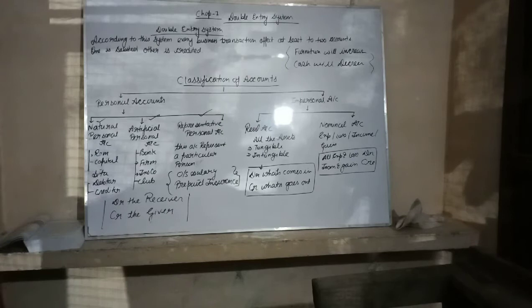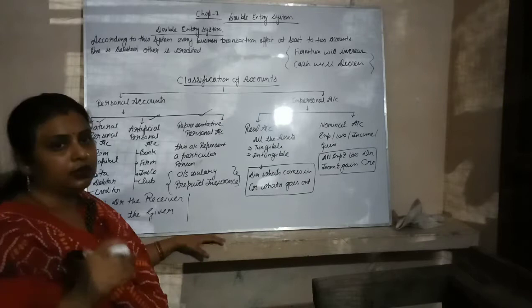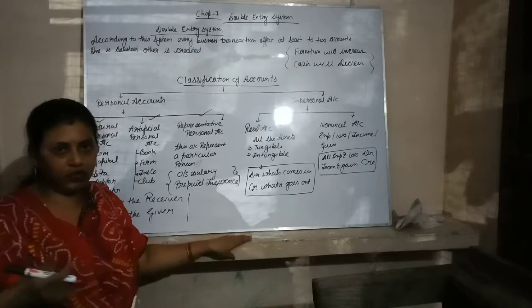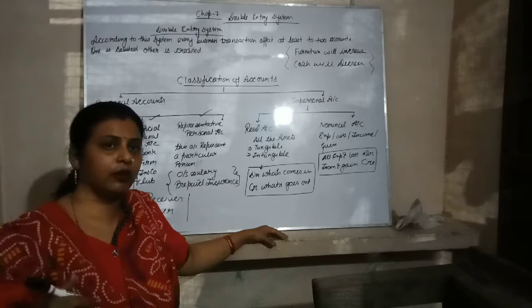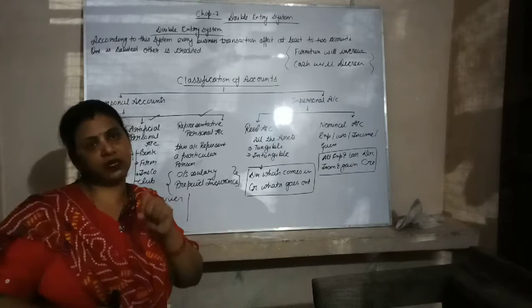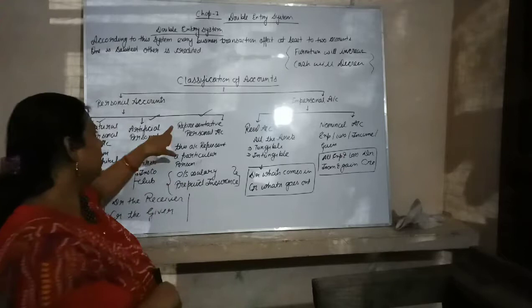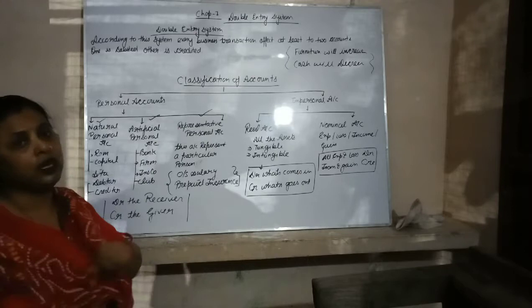Natural personal account includes all persons who are natural persons — meaning persons who can take breath, like human beings. In artificial personal account, it means persons who cannot take breath, cannot walk, cannot do any work like a human being, but according to the law, they are perceived and will work like a person. So it is called the artificial person.